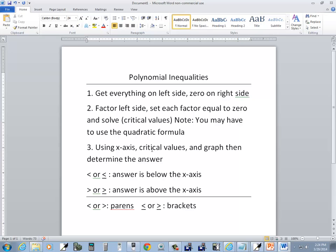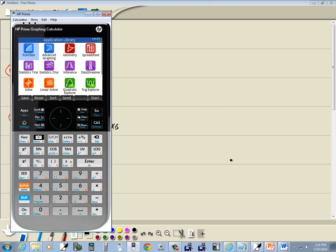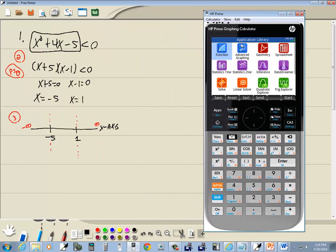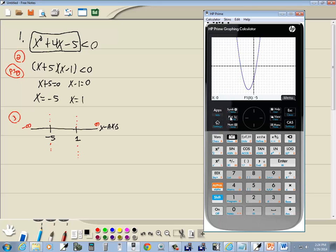Then it says using x-axis critical values. We just did that. And graph. So let's graph it. Now what we're going to graph is once you've got zero on one side then you can just plug this in your calculator. So let's see what that gives us. Okay. If you're not in your apps menu press your apps. Then we want to go into function. So highlight it and then press enter. Do a backspace to wipe out whatever's there. And then I'm going to do my x key. X squared. Plus 4x. Minus 5. And enter. And then I'll press my plot to graph it. Now what you're going to find is that your graph will cross the x-axis at the critical values you found. You see it's crossing at negative 5 and 1.